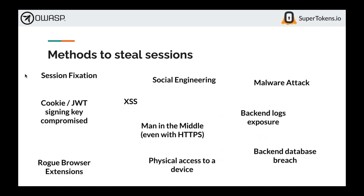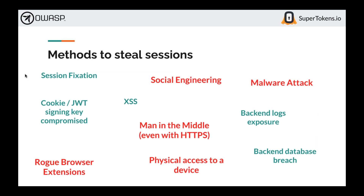Malware is not the only way sessions can be stolen — there are a bunch of other methods. Some of these are more solvable than others. The ones in green can be solved through careful technical implementation, whereas the ones in red can only be addressed by detecting session hijacking. For example, rogue browser extensions can read HTTP-only cookies for any website within the browser. If a user has a rogue extension installed, nothing your application can do will prevent it from reading cookies and sending them to the attacker — you can only detect it.